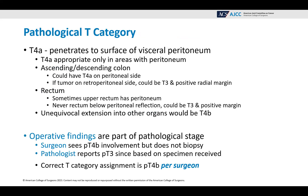For the pathological T category, T4A penetrates to the surface of the visceral peritoneum; therefore, T4A is only appropriate in those areas with peritoneum. That includes the ascending and the descending colon — you could have T4A on the peritoneal side, but if tumor is on the retroperitoneal side, that could be T3 with a positive radial margin. For the rectum, sometimes the upper rectum has peritoneum, but never the rectum below the peritoneal reflection — those could be T3 with a positive margin. Unequivocal extension into other organs would be T4B.